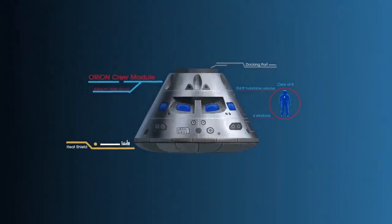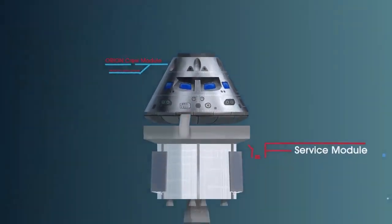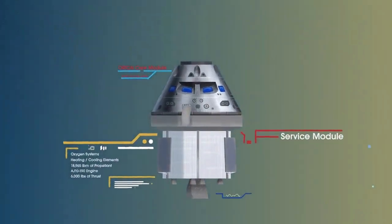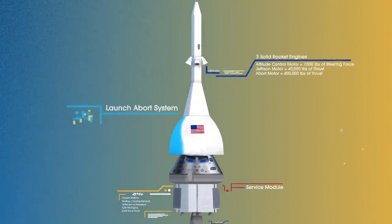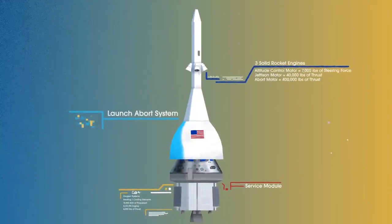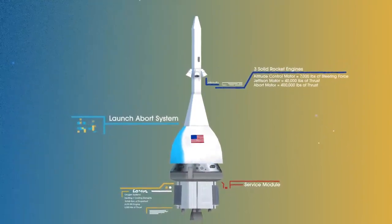The crew module, where up to four astronauts will live and work throughout the flight. The service module, with life-support systems for the crew and its own engine and fuel reserves. And a launch abort system, with engines capable of pulling the crew module to safety during launch should anything go wrong.